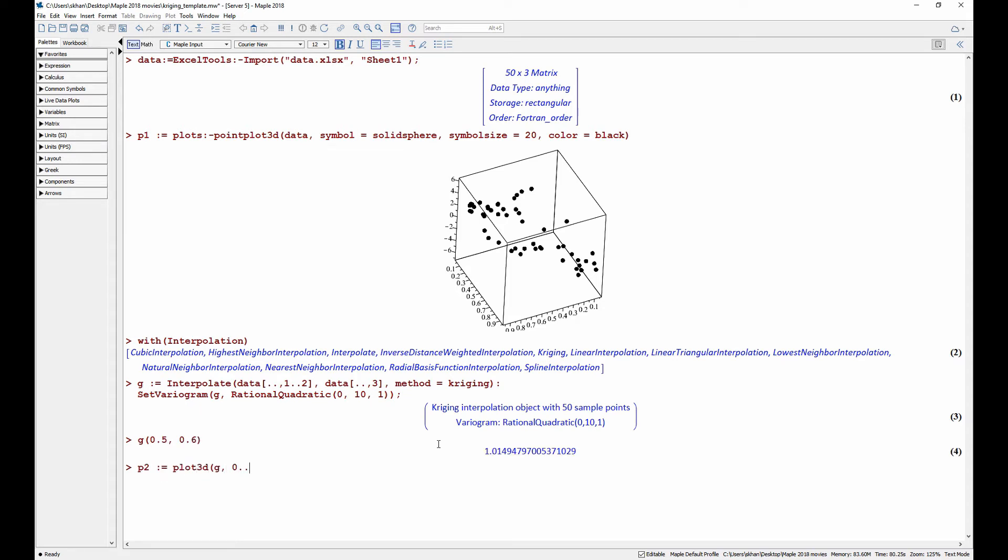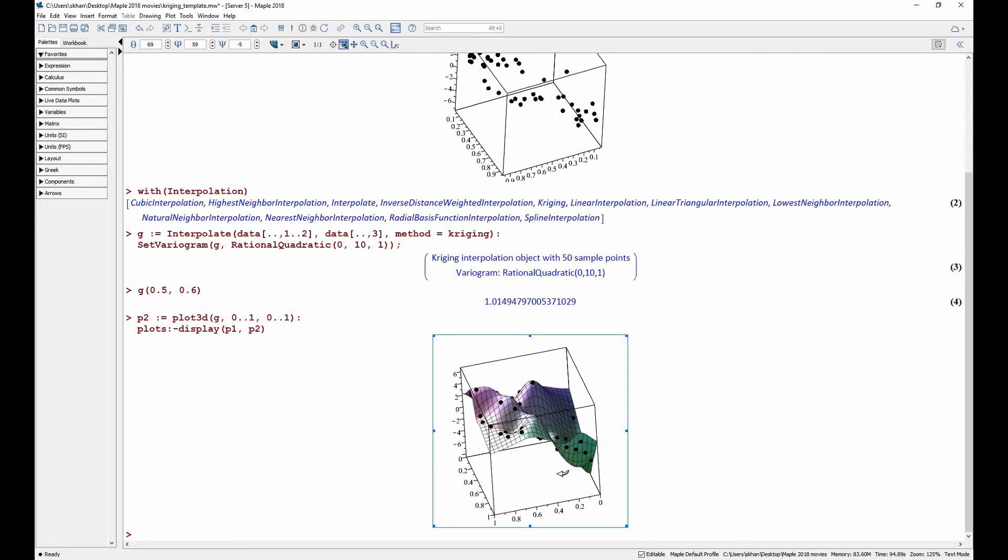We then generate an interpolated surface plot and compare it to the original scattered data set.